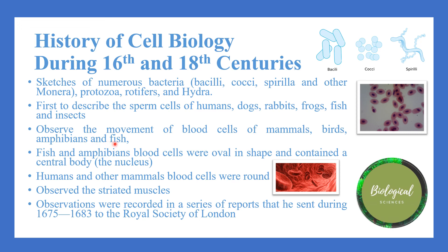Leeuwenhoek noted that blood cells of fish and amphibians were oval in shape and contained a central body — the nucleus — while those of humans and other mammals were round. He also observed striated muscles. Leeuwenhoek's observations were recorded in a series of reports that he sent during 1675 to 1683 to the Royal Society of London.